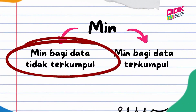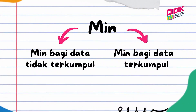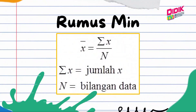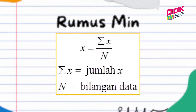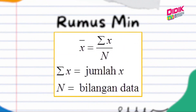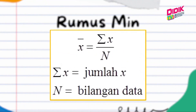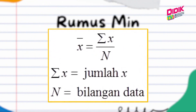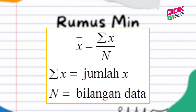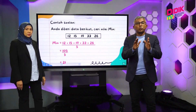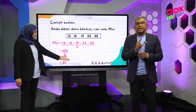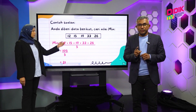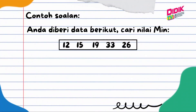Okey, cara-caranya, bagi mendapatkan min ataupun purata, jumlahkan semua data dan dibahagikan dengan bilangan data berdasarkan rumus ini. Ini contoh soalannya. Anda diberi data berikut. Cari nilai min.